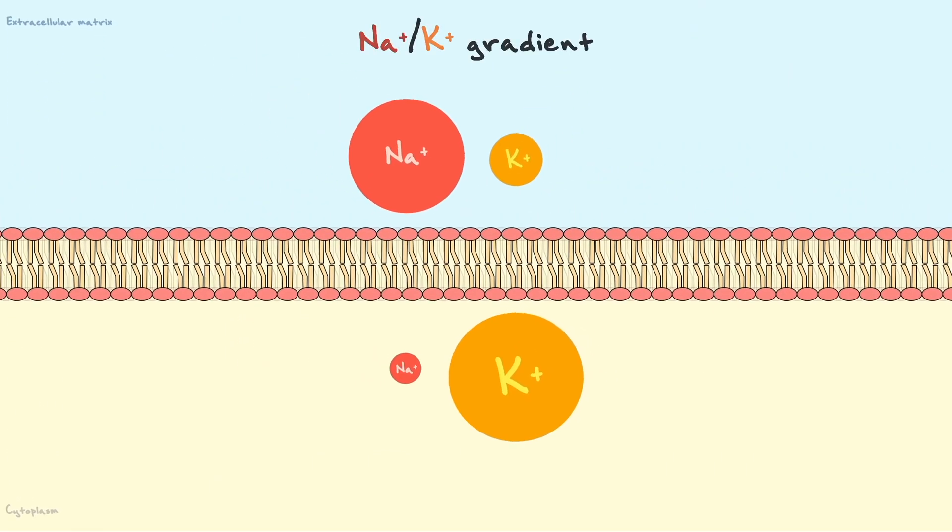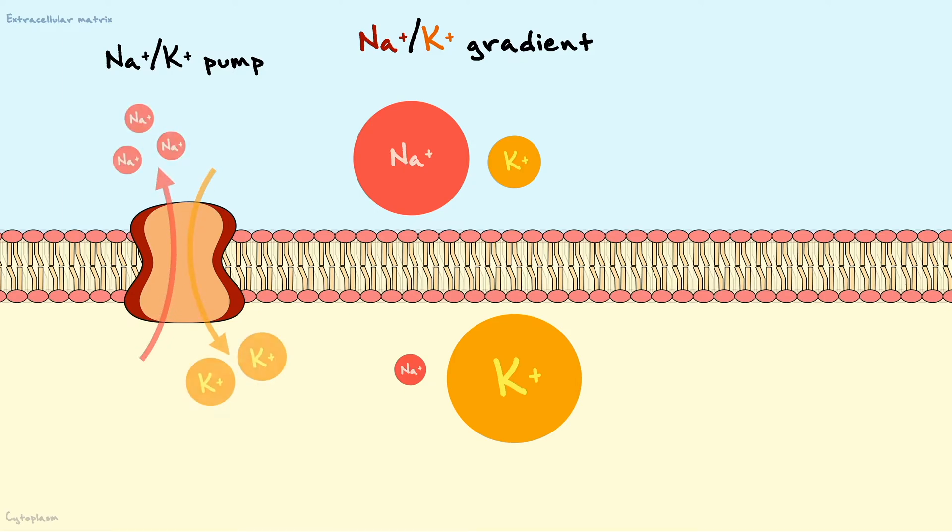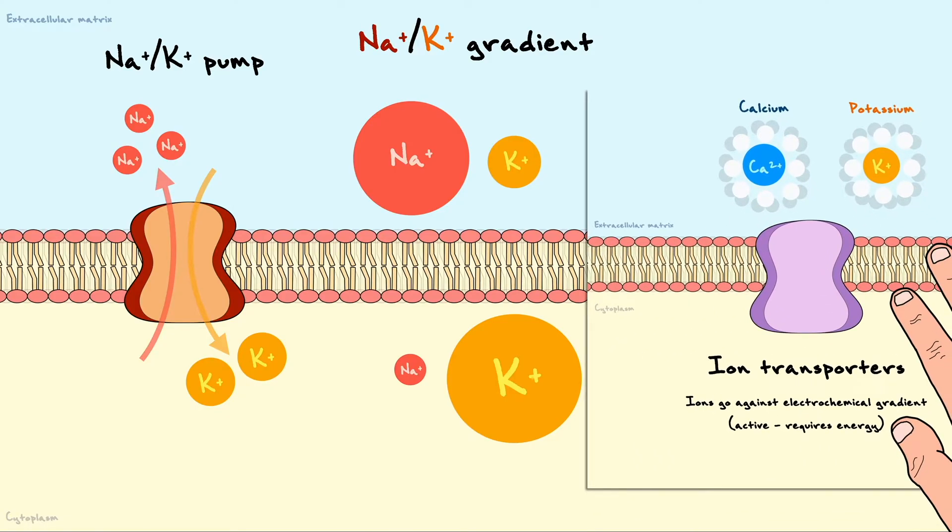The creation and maintenance of the sodium and potassium gradient is performed by the sodium-potassium transporter, also known as the sodium-potassium pump. During a cycle of this protein, it exports three sodium ions for every two potassium ions it imports. Remember that moving ions against their concentration gradient requires energy. In this case, the energy to move potassium and sodium comes from the hydrolysis of ATP.